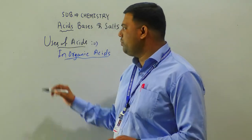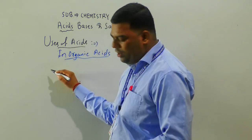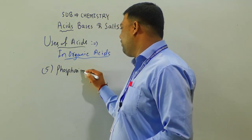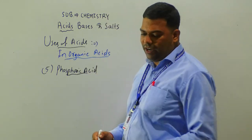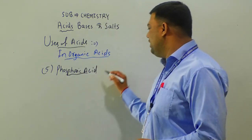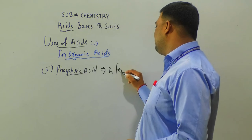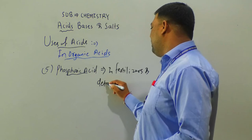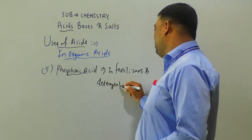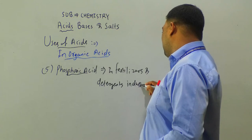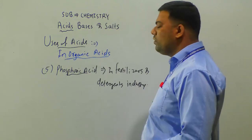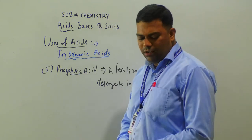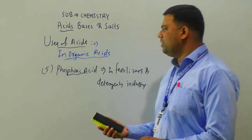Phosphoric acid is the fifth inorganic acid. It is widely used in fertilizers and in the detergents industry.